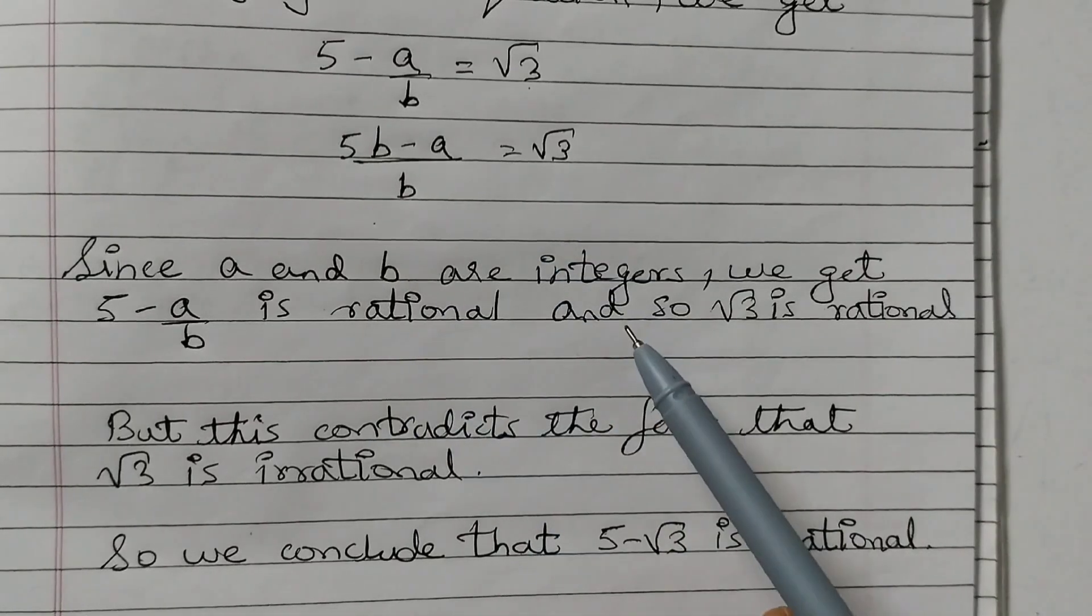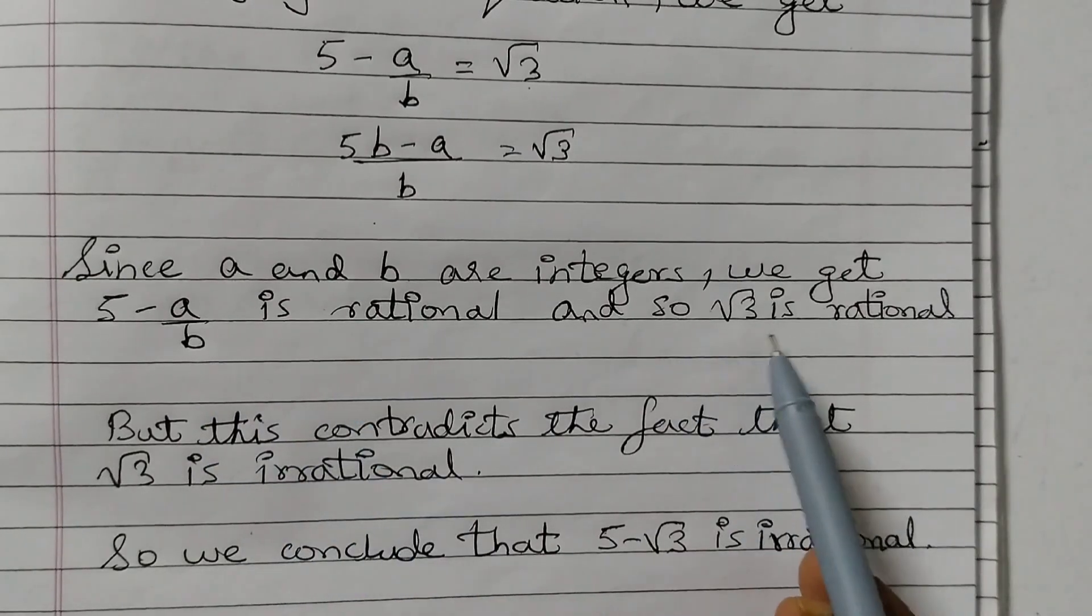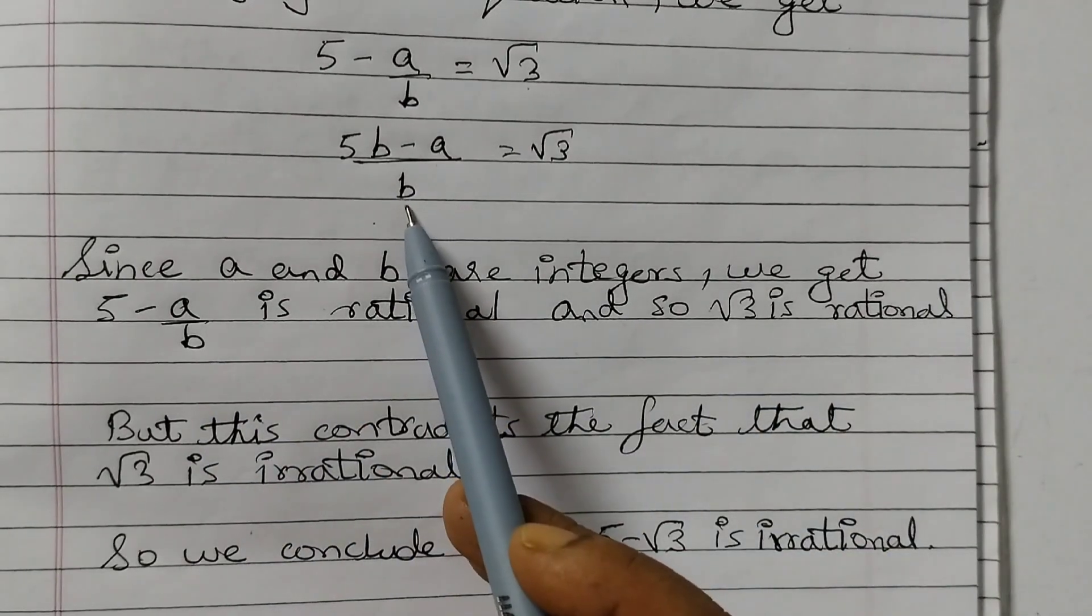Since A and B are integers, we get 5 minus A upon B is rational and so square root of 3 is rational. A, B are integers.